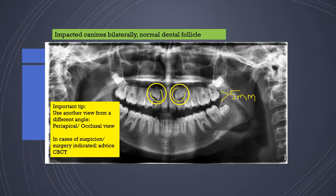When you are looking at such an image and are unsure, use another view from a different angle — perhaps a periapical or occlusal view already taken. If still in doubt or suspicion, you could take a CBCT if the teeth are indicated for surgery.